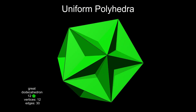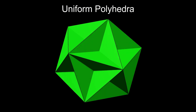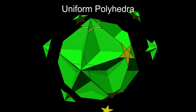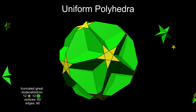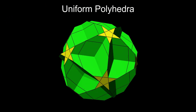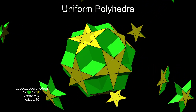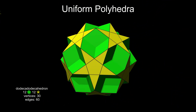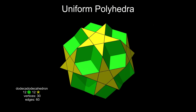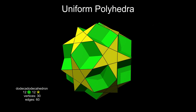Starting with the great dodecahedron, truncation gives us, not surprisingly, the truncated great dodecahedron. Further truncation, a process called rectification, gives us the dodeca-dodecahedron. This has 12 pentagons and 12 pentagrams that sit above the pentagons. It's a quasi-regular polyhedron, so all its edges are the same.